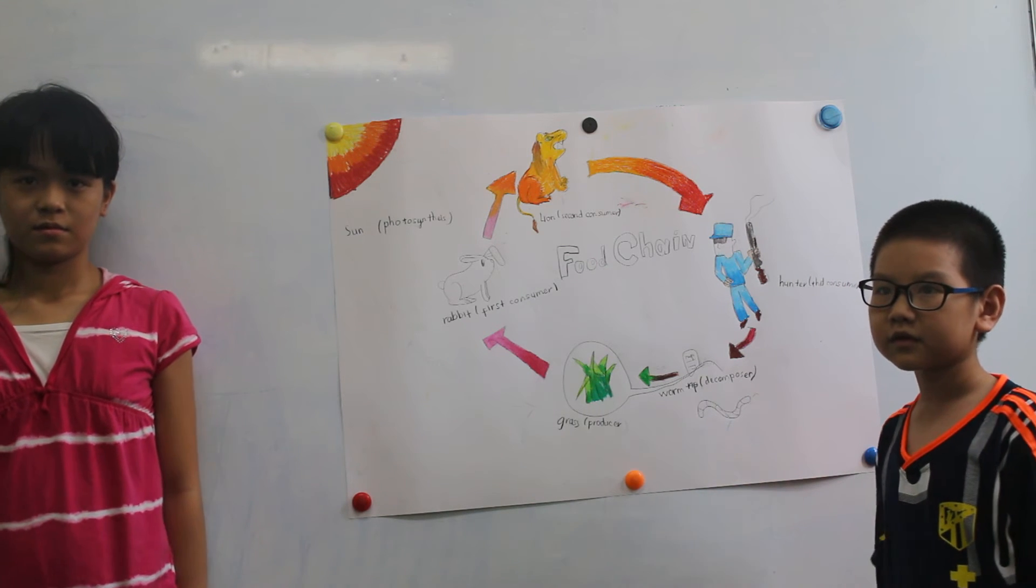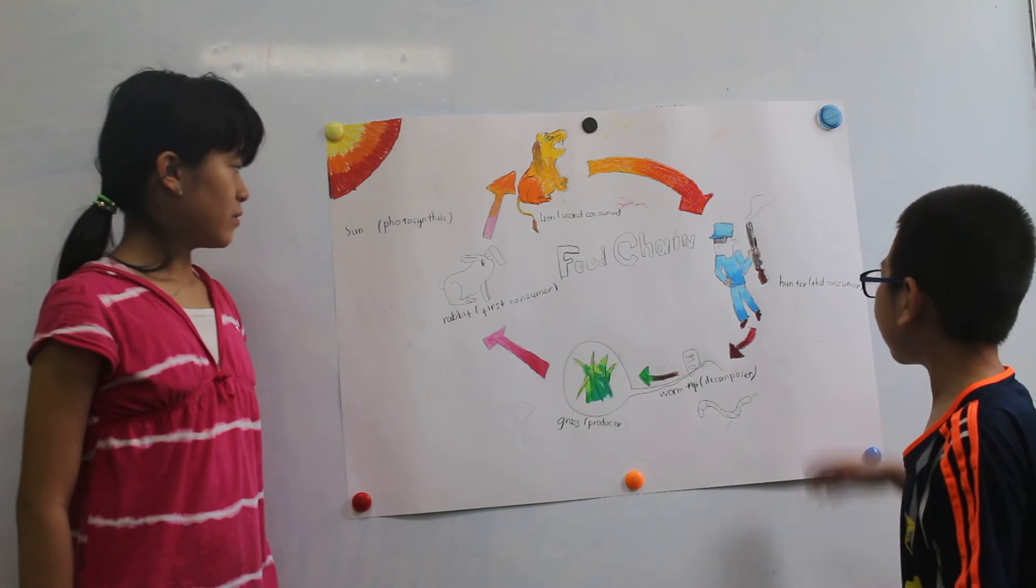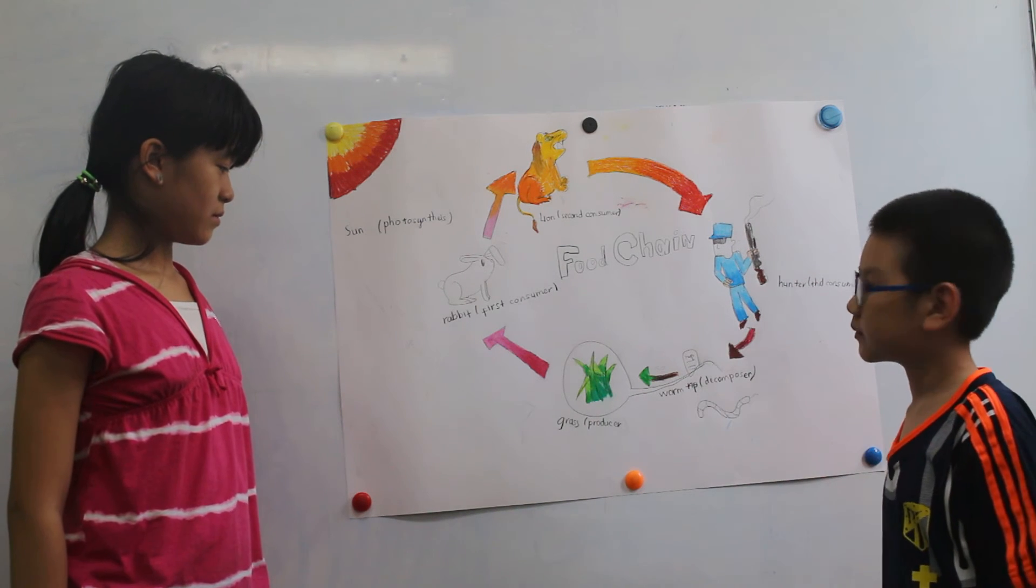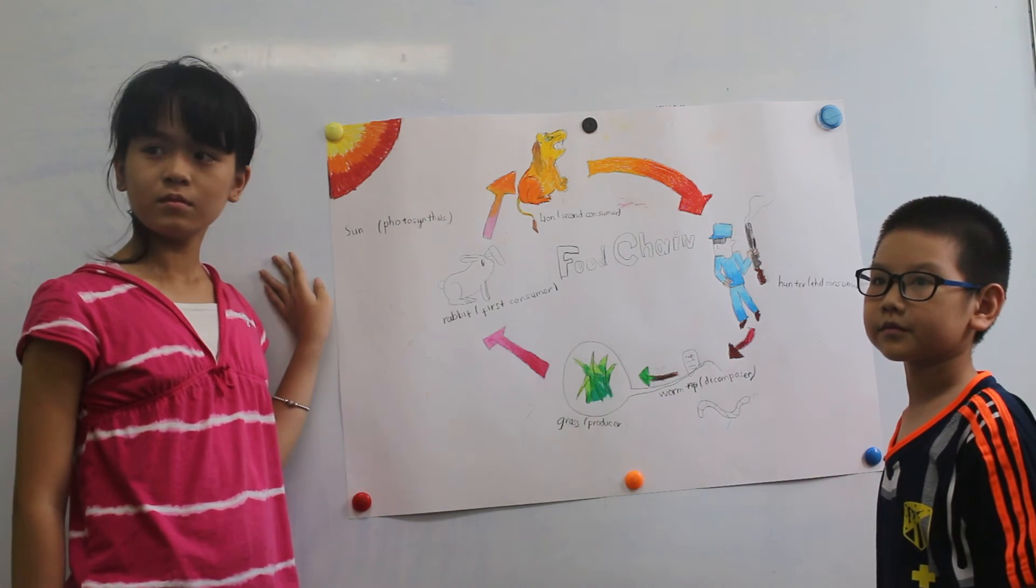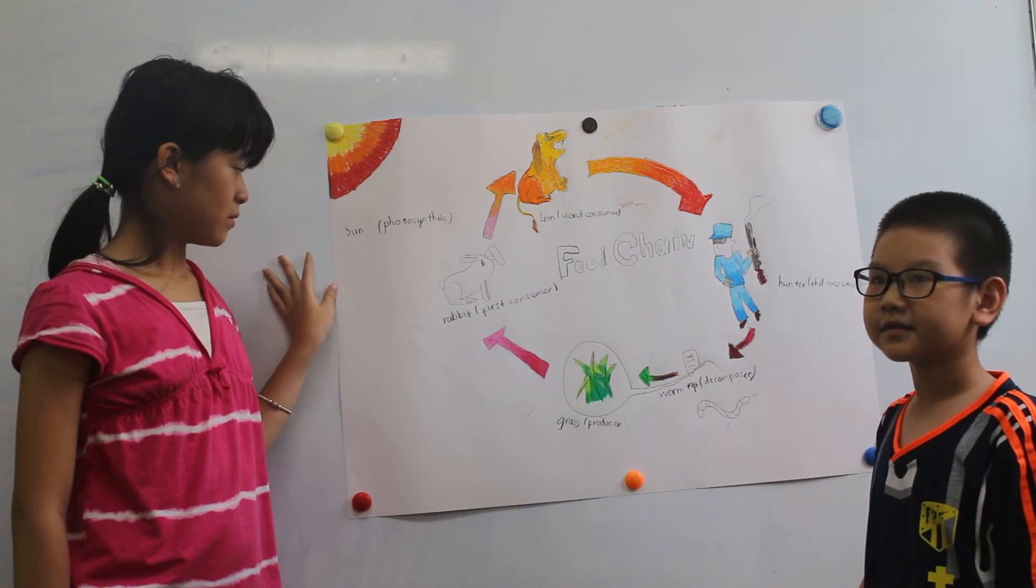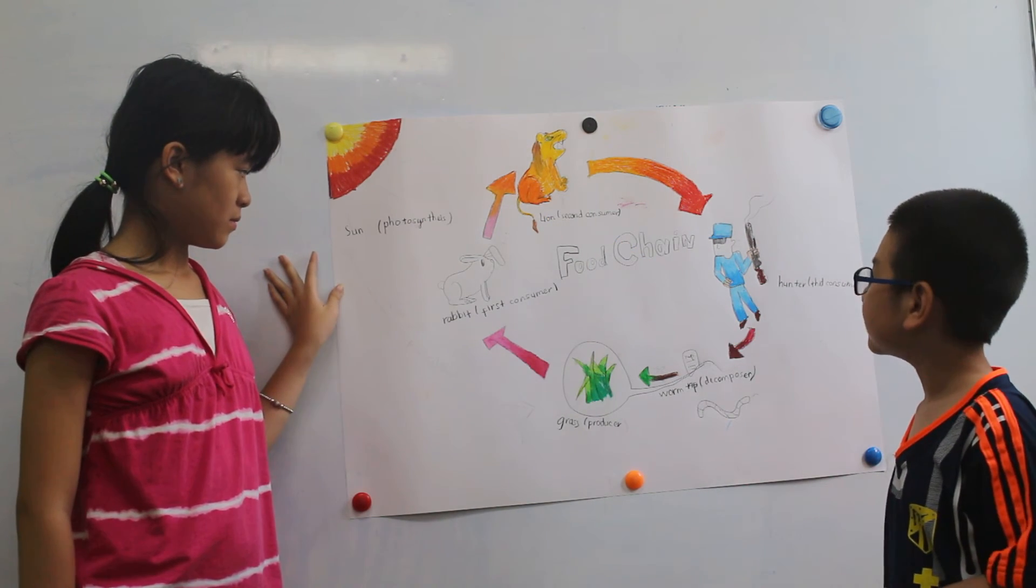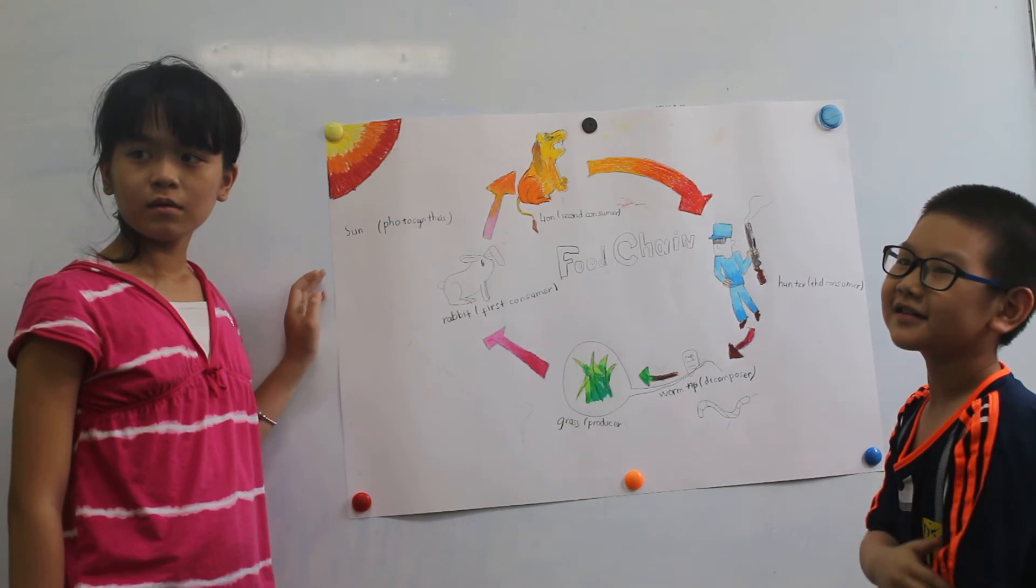Teacher: Who is the third consumer? Student: The hunter. Teacher: Who is the prey of the hunter? Student: The lion. Teacher: Who is the predator of the rabbit? Student: The lion. Teacher: Who is the predator of the lion? Student: The hunter.